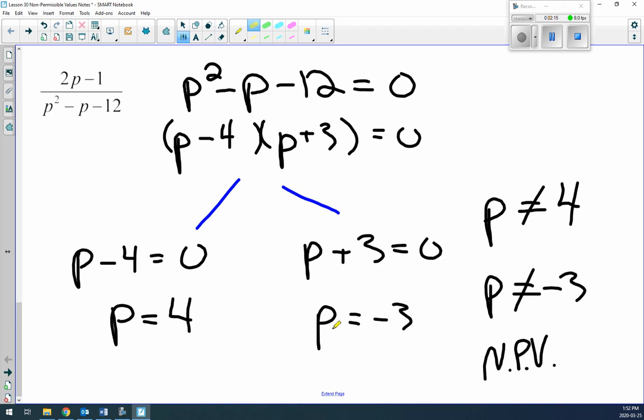So all you do is take the denominator, only the denominator, and set it equal to zero. That's how you find the non-permissible values. Okay, so that was Lesson 30.